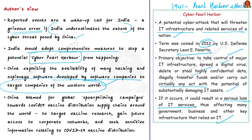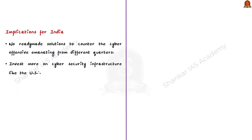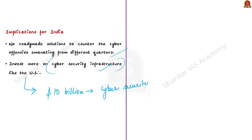China has been blamed for cyber espionage activities including global spear phishing campaigns targeting COVID-19 vaccine distribution supply chains, seeking vaccine research data and gaining future access to corporate networks. The author notes there are no ready-made solutions to counter cyber offensives emanating from different countries, but India can invest more in cybersecurity infrastructure. The US recently included over $10 billion for cybersecurity in the COVID-19 relief bill, clearly aiming to improve readiness and resilience in cyberspace. India can similarly opt for increased investment as the key measure.